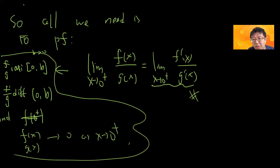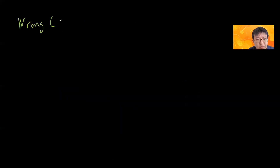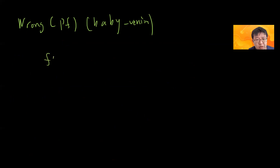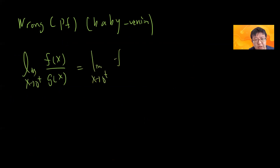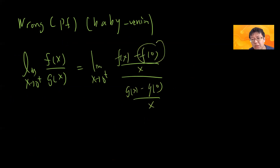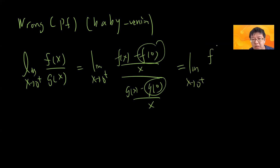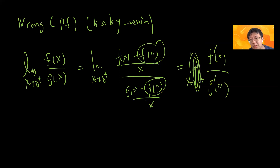Let me first write down the wrong proof — or rather, the first-year 'baby' version. Some people say L'Hôpital's Rule is trivial: since both f(0) = 0 and g(0) = 0, and x never equals zero as x → 0⁺, you can write f(x)/g(x) = [f(x)−f(0)] / [g(x)−g(0)], divide numerator and denominator by x, and by the definition of the derivative this becomes f'(0)/g'(0). Seems trivial, right?